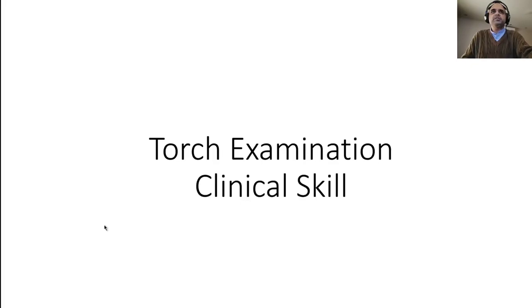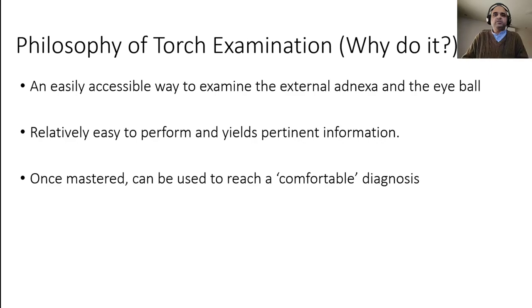Good morning, continuing with another clinical skill demonstration video. This time it's the torch examination. We will discuss both the ocular adnexa examination and the examination of the eyeball. Both are done with the torch. Torch examination is a very simple form of examining the eyeball, but it allows you to collect a lot of information if done properly. Once mastered at an undergraduate level, it enables a comfortable diagnosis of all disease entities expected in your clerkship.